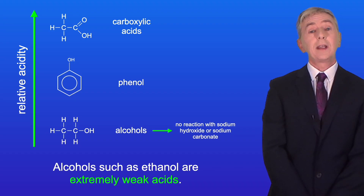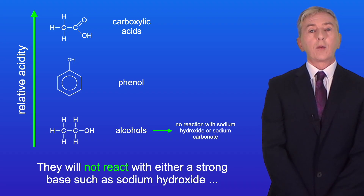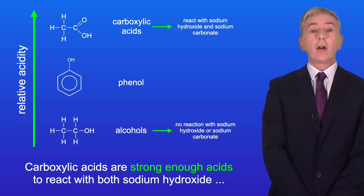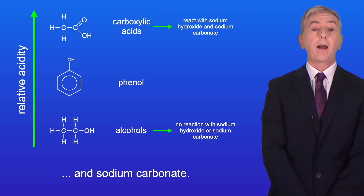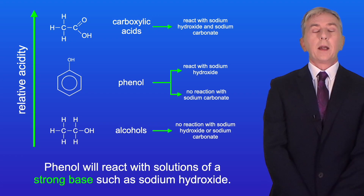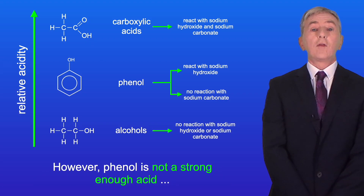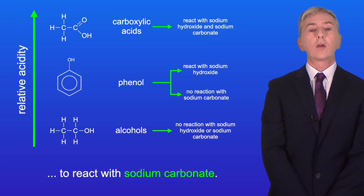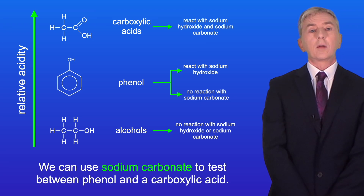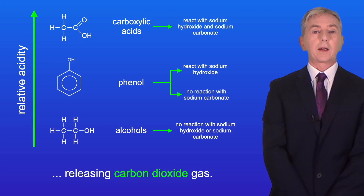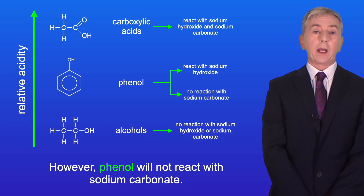Alcohols such as ethanol are extremely weak acids — they will not react with either a strong base such as sodium hydroxide, or a weak base such as sodium carbonate. Carboxylic acids are strong enough to react with both sodium hydroxide and sodium carbonate. Phenol will react with solutions of a strong base such as sodium hydroxide. However, phenol is not a strong enough acid to react with sodium carbonate. So we can use sodium carbonate to test between phenol and a carboxylic acid: a carboxylic acid will release carbon dioxide gas, whereas phenol will not react.